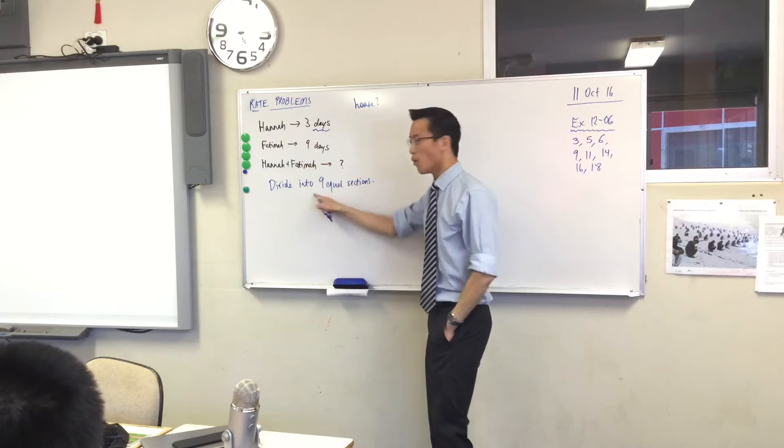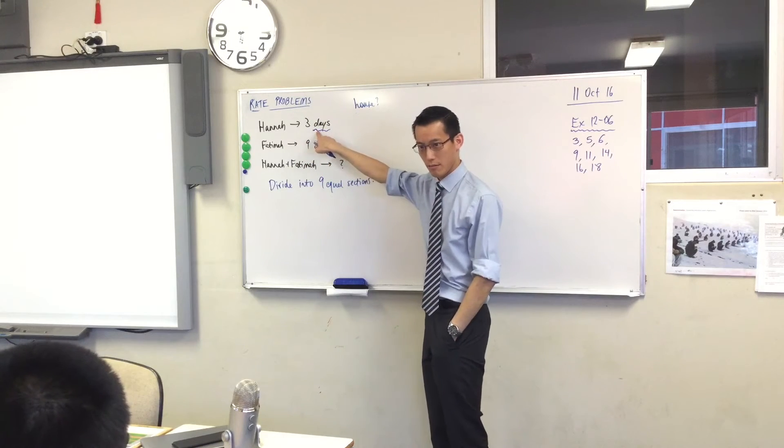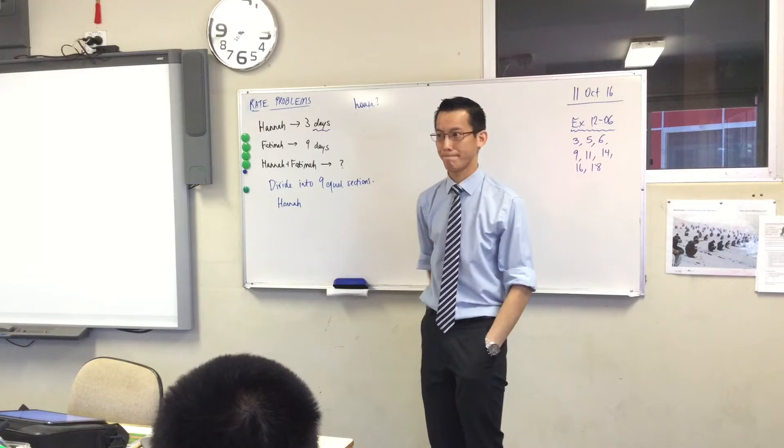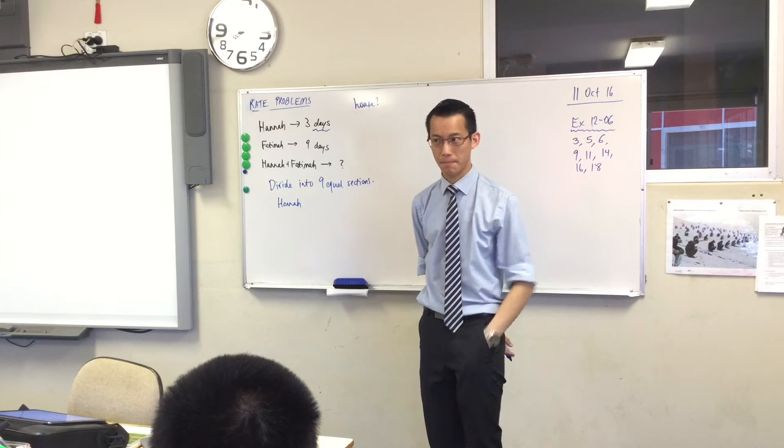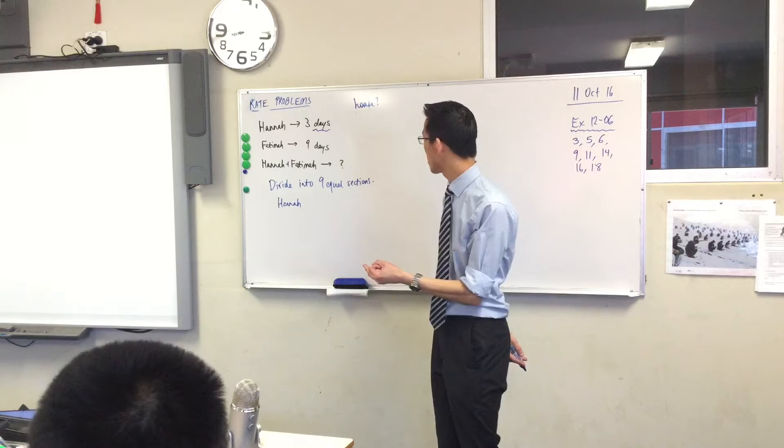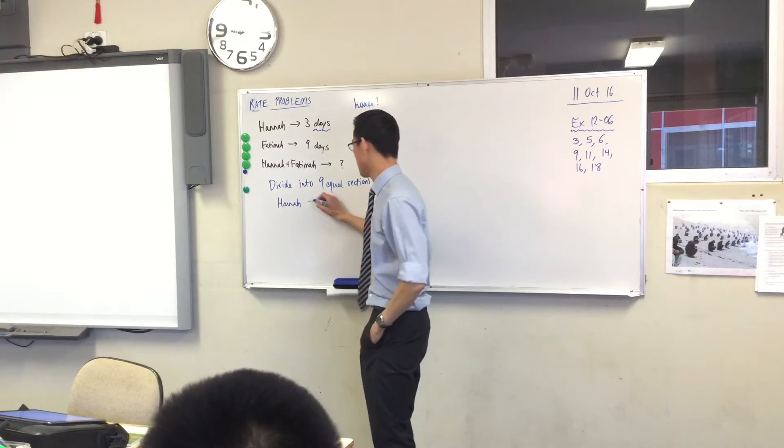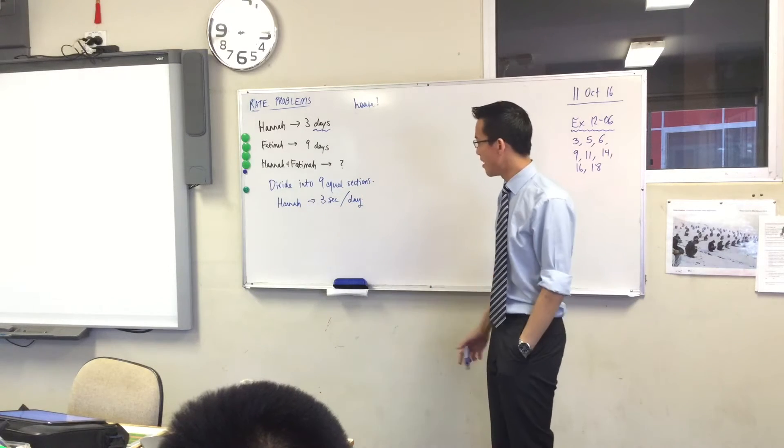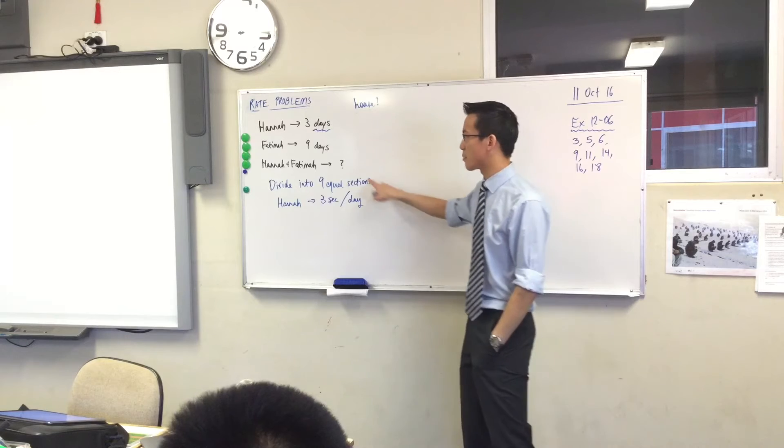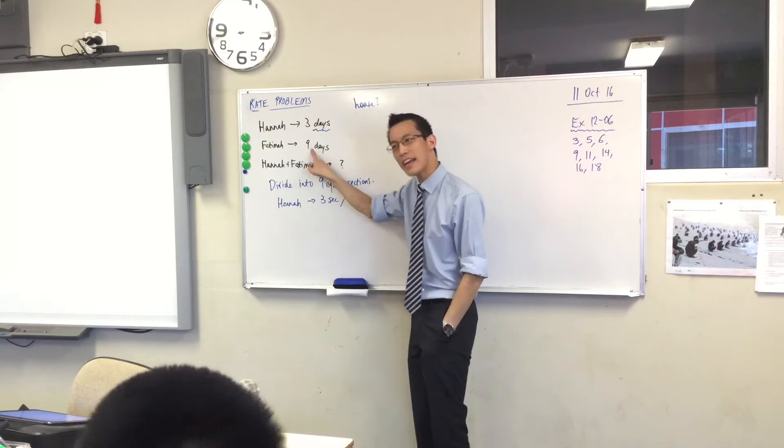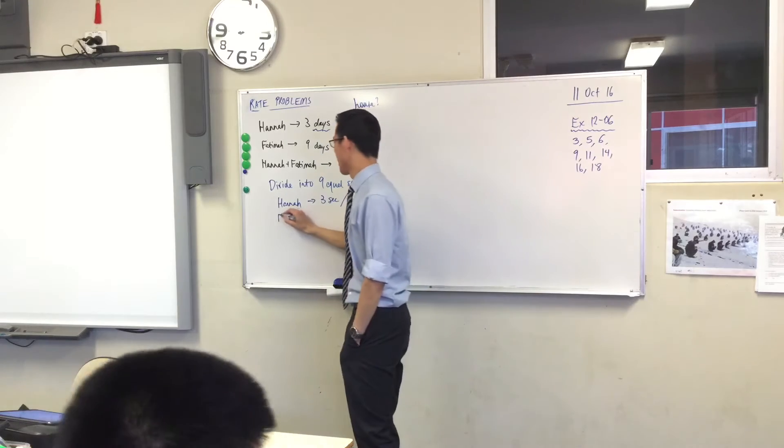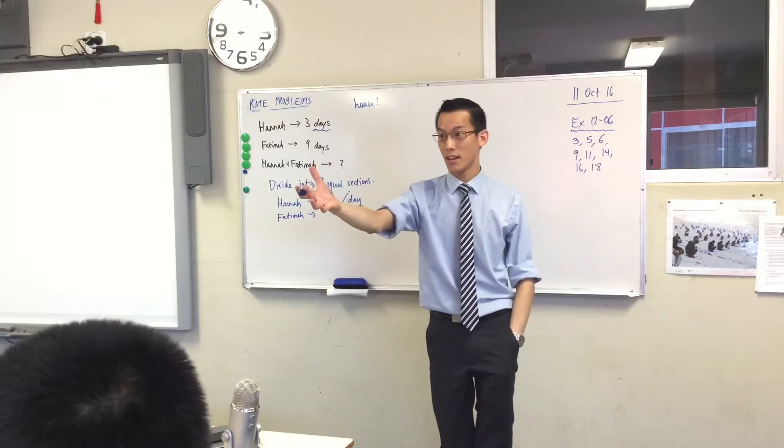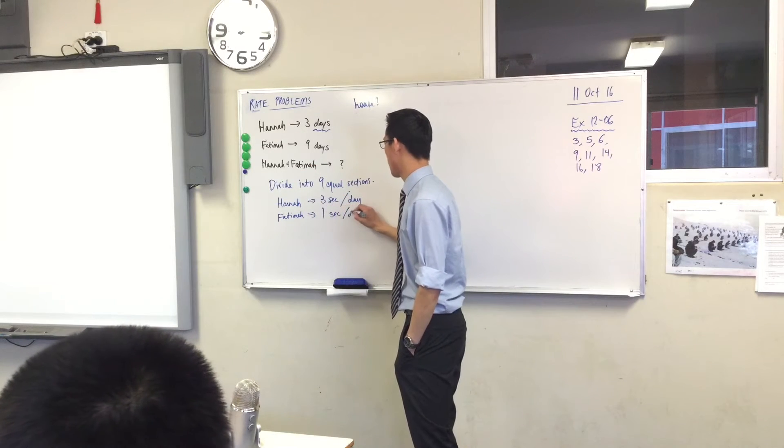Hannah can do all nine sections in three days, right? So, how many sections can she do per day? Think carefully. She can do three sections every day. Does that make sense? Three sections per day, okay? I have a rate now, okay? But this rate is better because I can compare it to Fatima's rate. She takes nine days to do nine sections, right? So therefore, how many sections is she doing each day? One. One section per day.